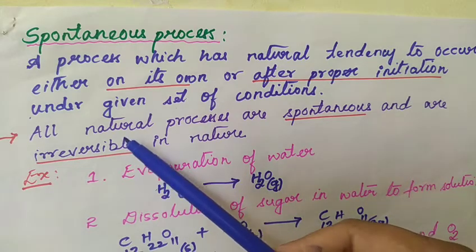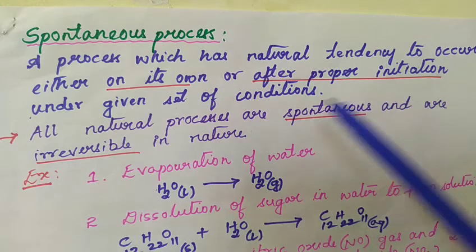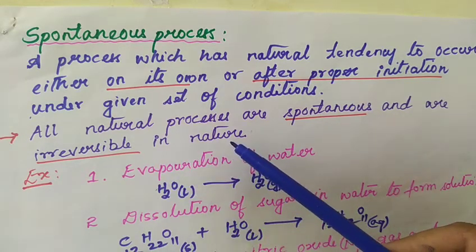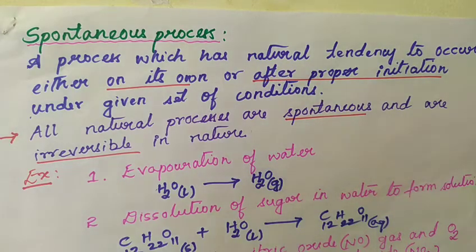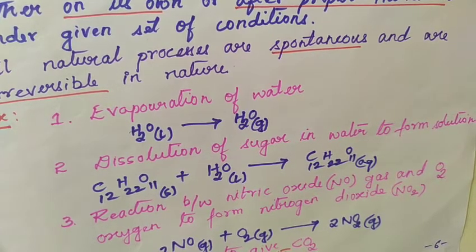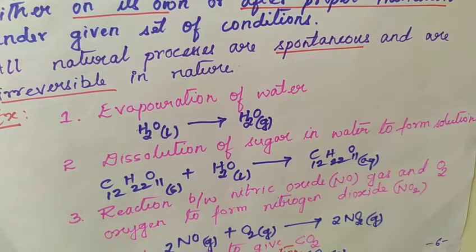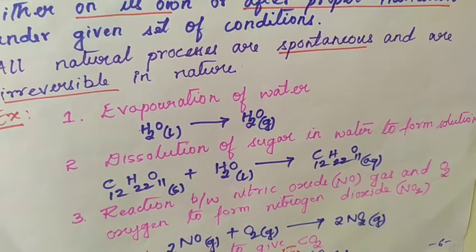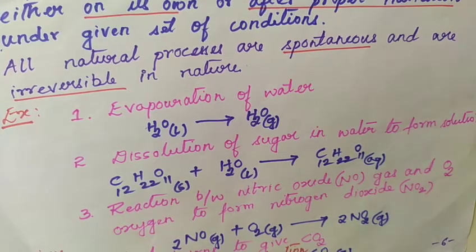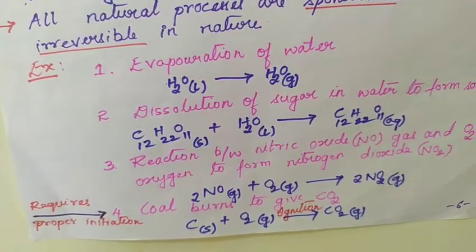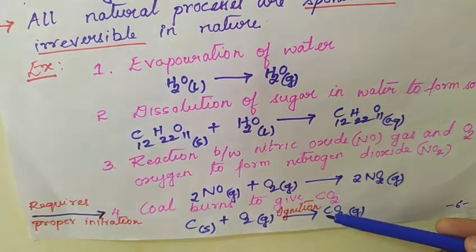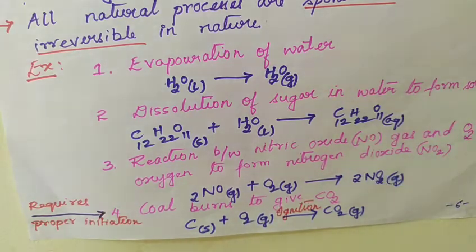All natural processes are spontaneous and irreversible in nature — for example, burning of fuel is spontaneous but irreversible. Examples of spontaneous processes: evaporation of water is spontaneous; dissolution of sugar in water to form a solution is spontaneous; the reaction between nitric oxide gas and oxygen to form nitrogen dioxide is also spontaneous. These three require no initiation. Some reactions require initiation — for example, burning of coal to give carbon dioxide occurs on its own but only after proper initiation.